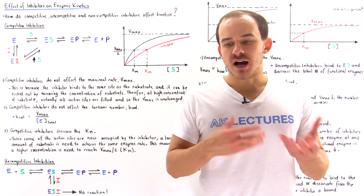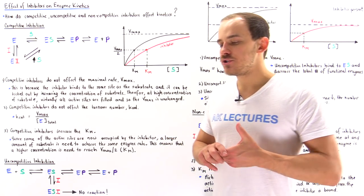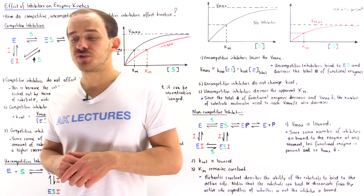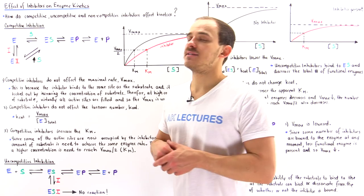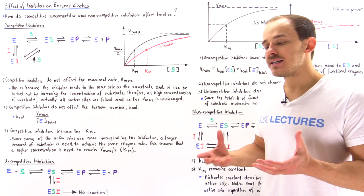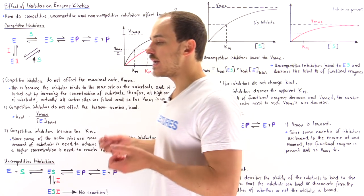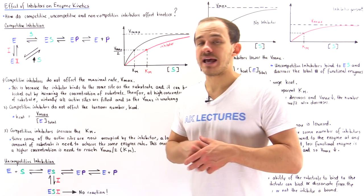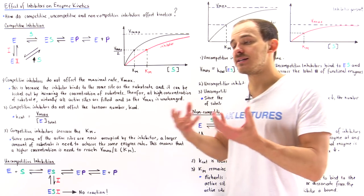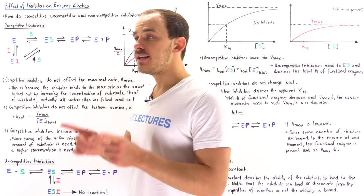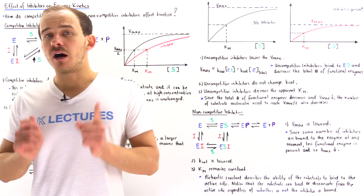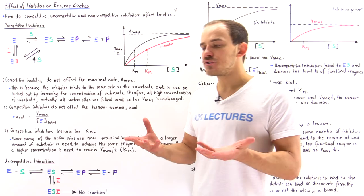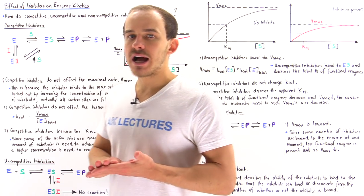Previously we discussed the concept of enzyme inhibition and we said there are two categories of enzyme inhibitors. We have irreversible enzyme inhibitors that bind onto the enzymes and don't let go, don't dissociate very easily. And we also have the reversible enzyme inhibitors that bind onto the enzymes but they can dissociate quite easily under specific conditions. We also said we can subdivide reversible inhibitors into three types.